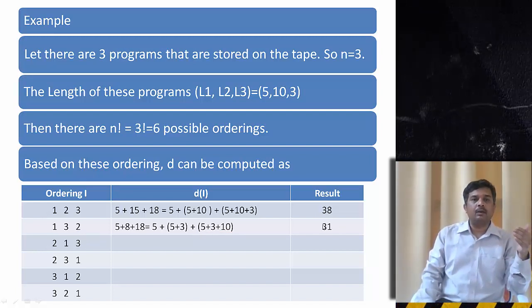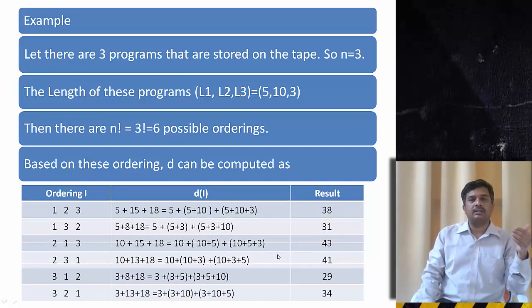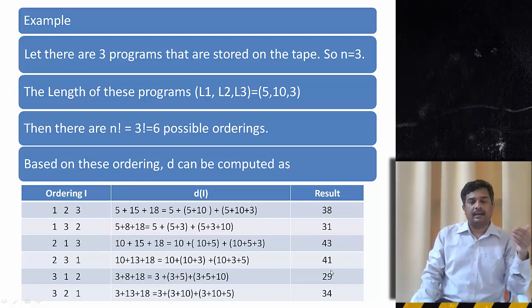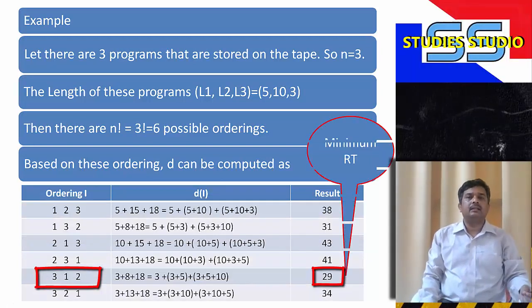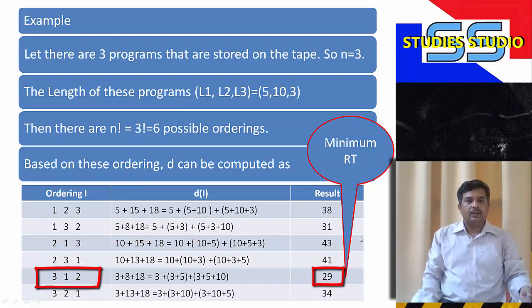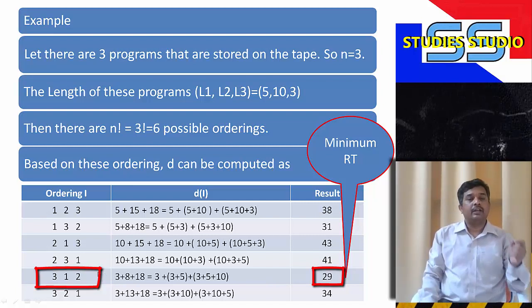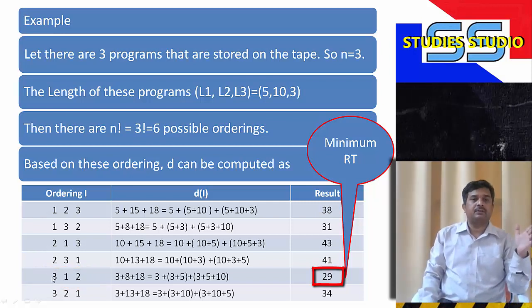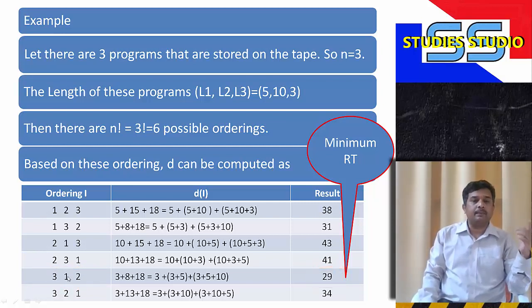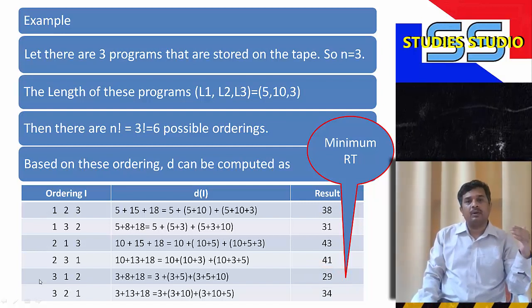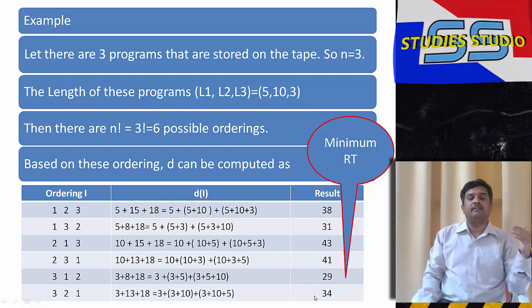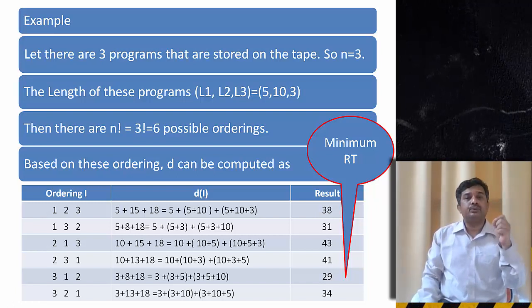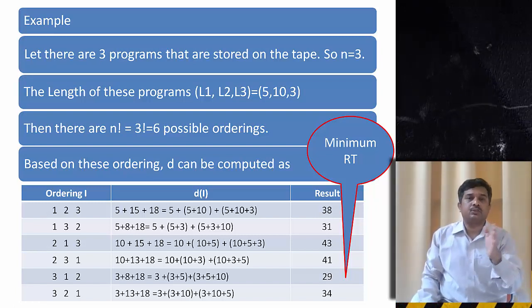So similarly, if we carry on working out with all these sequences, I can see 29 is the minimum time that I will get. So I will get the minimum retrieval time as 29. The order in which we are getting it means if I want to put on the tape the third program first, the first program second, and the second program third, if I put in this order only I will get the minimum retrieval time that is 29. So this is how we are going to apply greedy technique to solve the optimal storage on a tape.